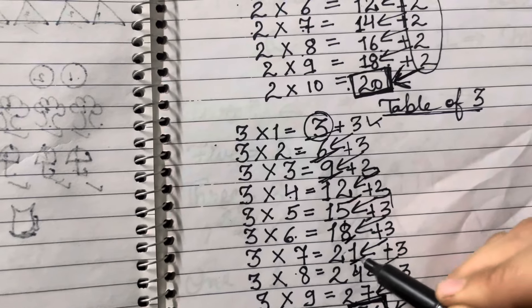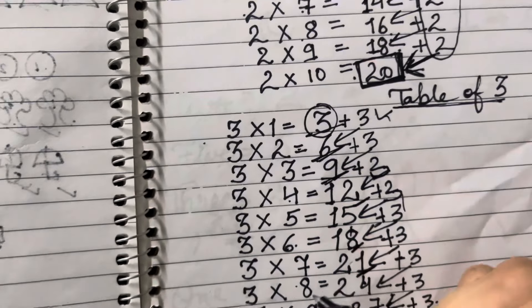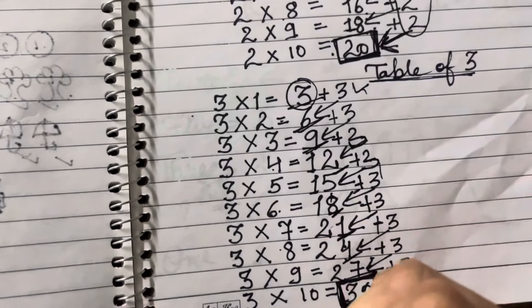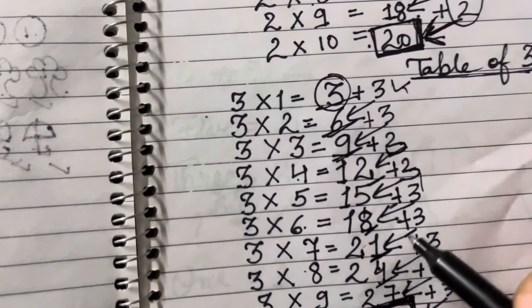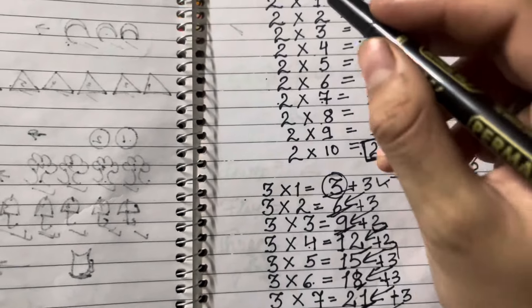3 7's are 21, 3 8's are 24, 3 9's are 27, 3 10's are 30. Like, share, and subscribe for more videos.